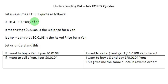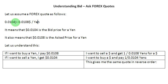Let us focus on the denominator currency for a moment, that is yens. If I want to buy yens, according to this quote, I will have to pay the ask price in terms of dollars, which is 0.0108 dollars. And if I have a yen to sell, I am going to get 0.0104 dollars for it, because this is the bid price.